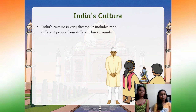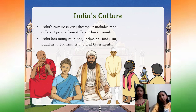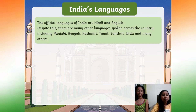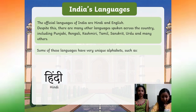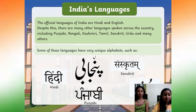India's culture is very diverse, including many different people from different backgrounds. India has many religions including Hinduism, Buddhism, Sikhism, Islam, and Christianity. India's languages: the official languages of India are Hindi and English. Despite this, there are many other languages spoken across the country including Punjabi, Bengali, Kashmiri, Tamil, Sanskrit, Urdu, and many others. Some of these languages have very unique alphabets, such as Hindi, Urdu, Sanskrit, and Punjabi.